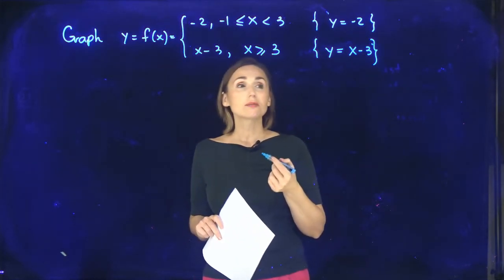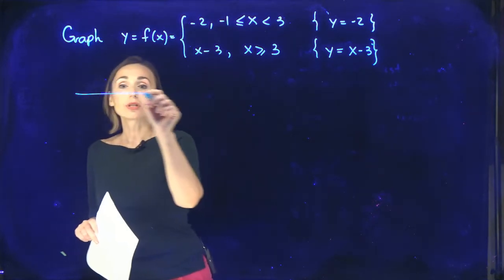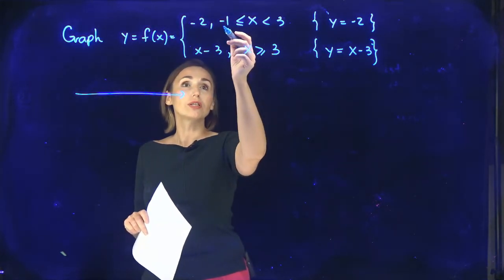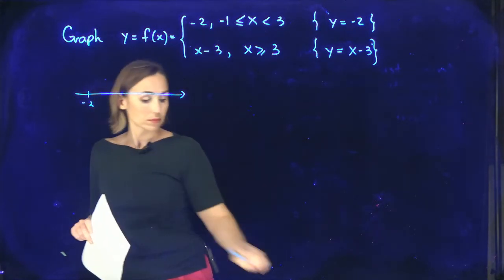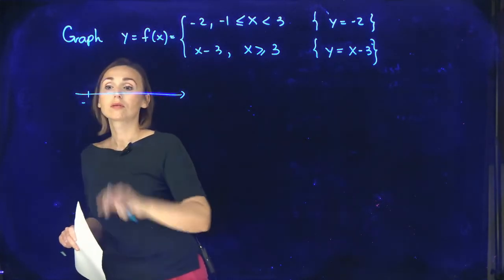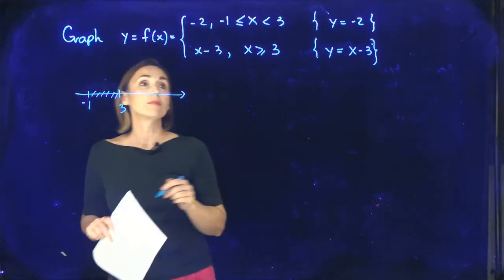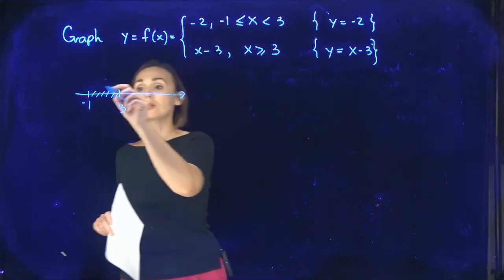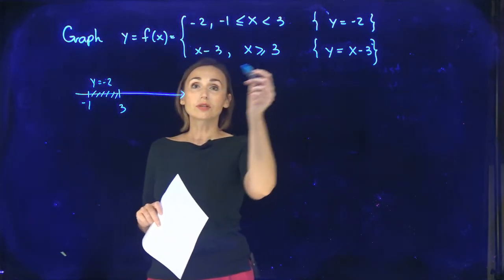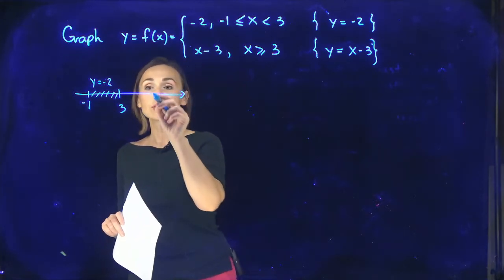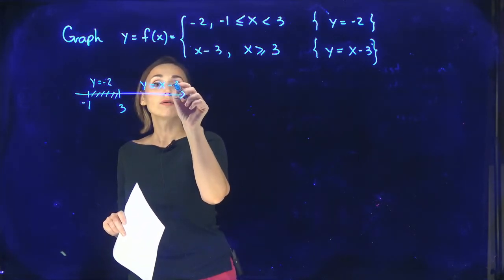How to graph this piecewise defined function? We need to start from the restrictions for x. For x between negative 1 and 3, on this interval my function is supposed to be y equals negative 2. And after 3, where x is greater than or equal to 3, my function is supposed to be y equals x minus 3.